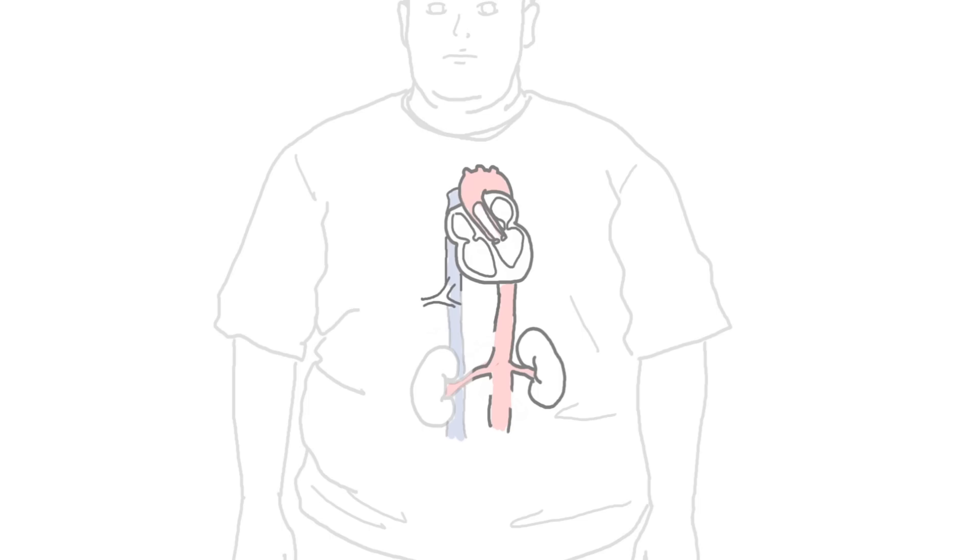As we know, the heart pumps blood via the arteries to our systemic circulation where it will deliver blood to the kidneys, femoral arteries, and eventually the blood returns to the heart via the veins.